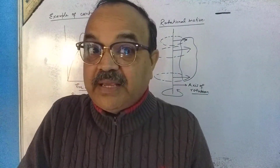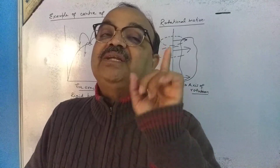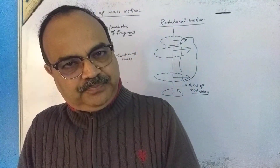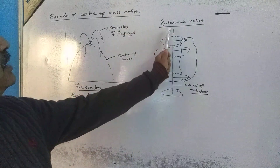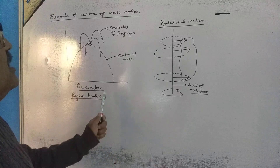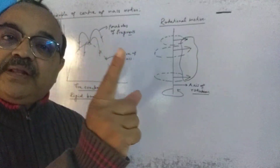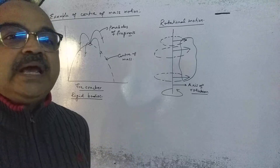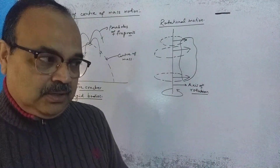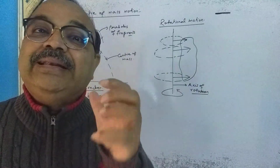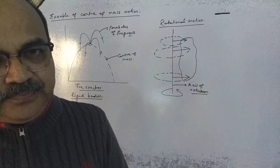The rigid body is that which cannot be deformed — its shape and size cannot be changed by the application of force. With the help of this rigid body, we come to rotational motion, which is a very important topic. There is certainly a difference between circular motion and rotational motion, and now we shall concentrate on exactly what rotational motion is.